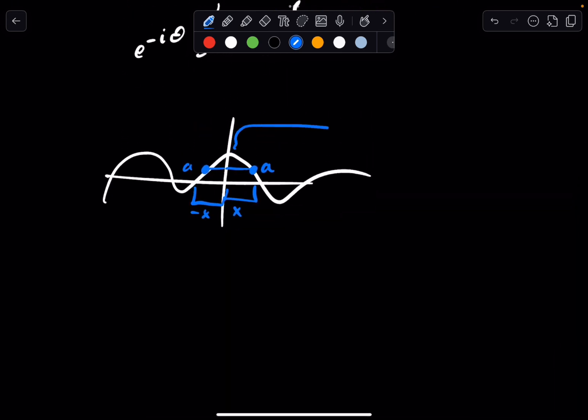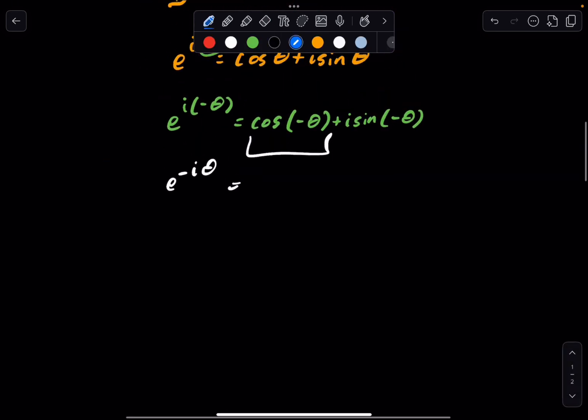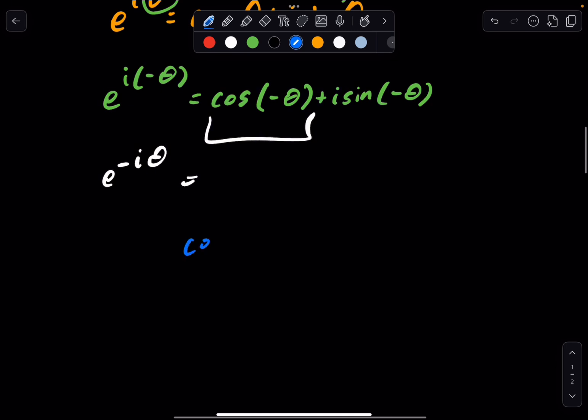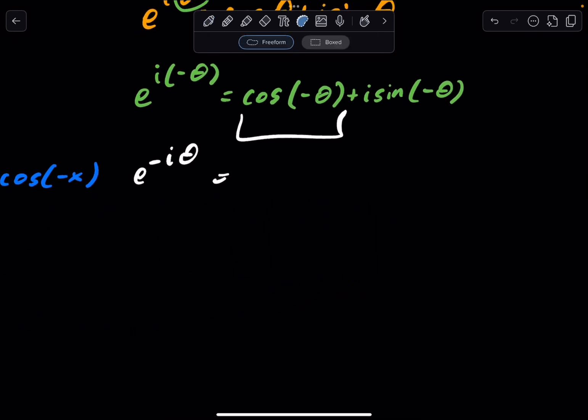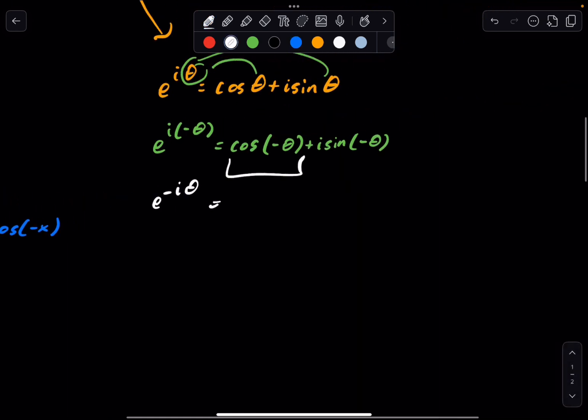So this means that cosine is an even function, because if you reflect this part of the graph over the y-axis like that, it'll be all perfectly symmetrical. Or if you rotate it, it's perfectly symmetrical in regards to the y-axis, just like that. So that's what we mean when we say cosine is an even function. What that means is cosine of x is equal to cosine of negative x. So we don't have to worry about that. That's an even function.